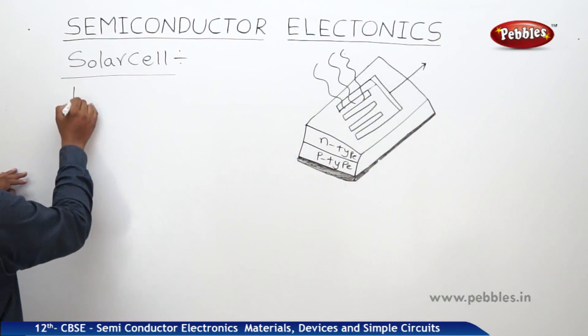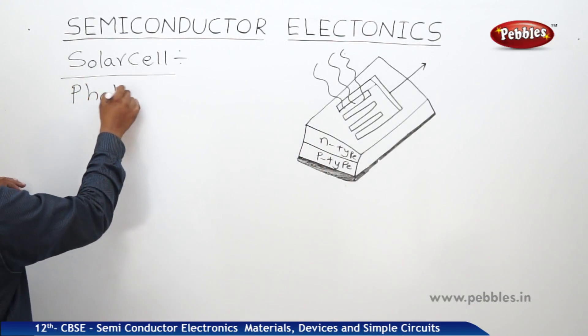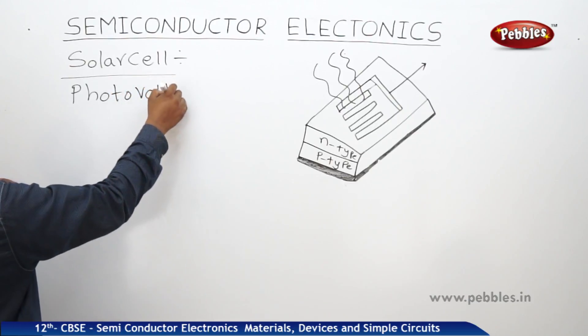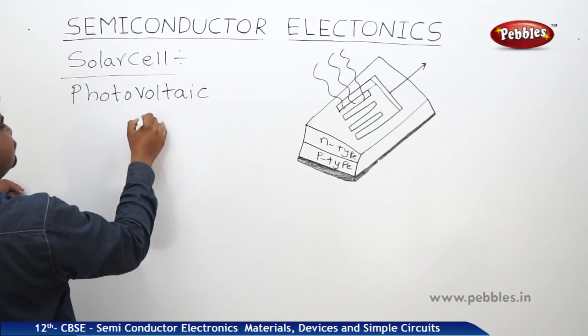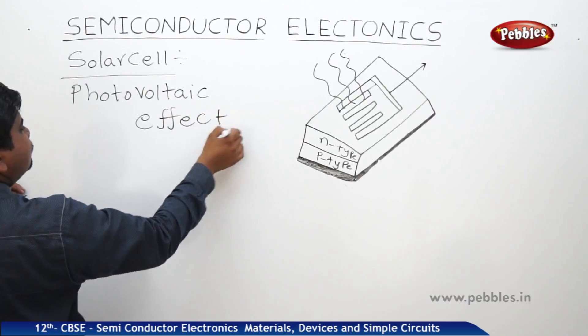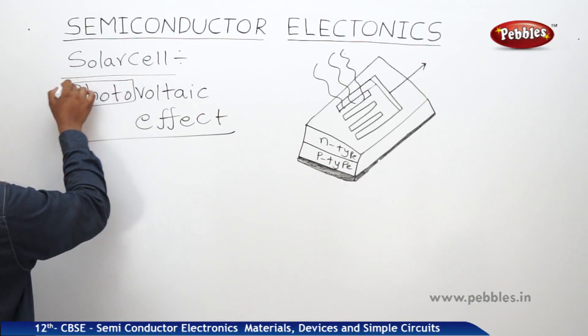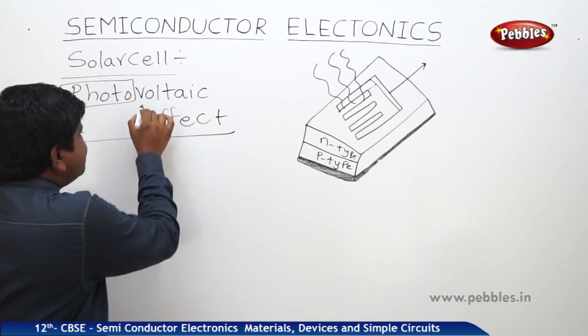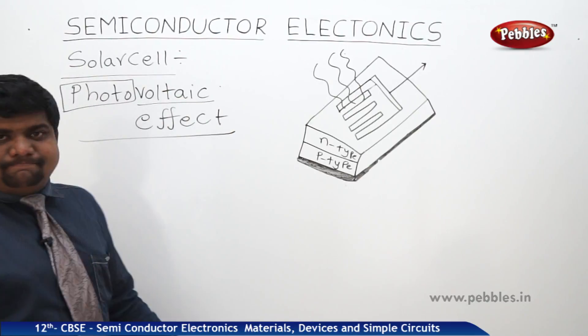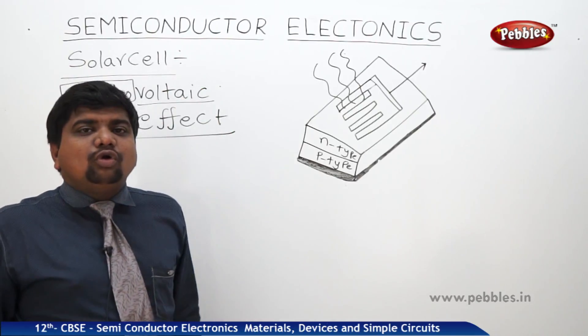So, the effect behind the solar cell is photovoltaic effect. Means the light which is incident on a metal surface is converting to voltage. That's why it is said to be photovoltaic effect.